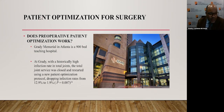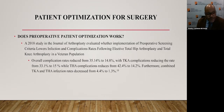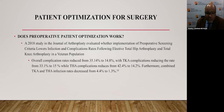Why is smoking an important modifiable risk factor? A systematic review and meta-analysis in the Journal of Arthroplasty in 2019 quantitatively assessed the association between tobacco use and wound complications and periprosthetic joint infection after primary THA and TKA. Fourteen studies were included. Users of tobacco had a significantly higher risk of wound complications with a risk ratio of 1.78 and periprosthetic joint infection with a risk ratio of 2.02 compared to non-tobacco users. Does preoperative patient optimization work? Grady Memorial Hospital in Atlanta, a 900-bed teaching hospital, had a historically high infection rate for total joints. The total joint service was closed and restarted using a new patient optimization protocol, dropping infection rates from 12.9% to 1.9%.